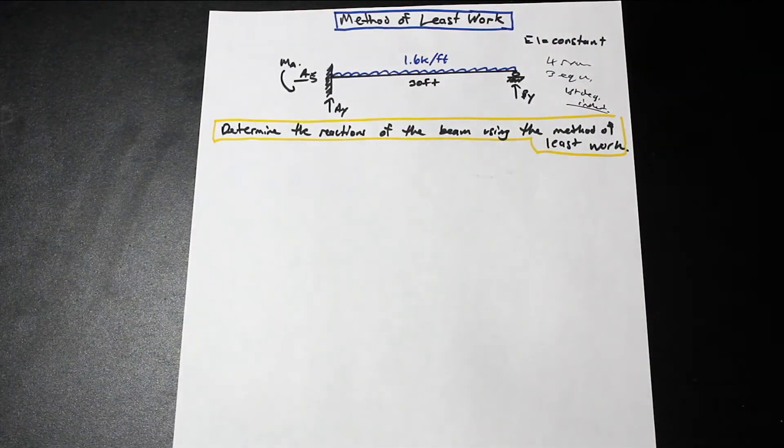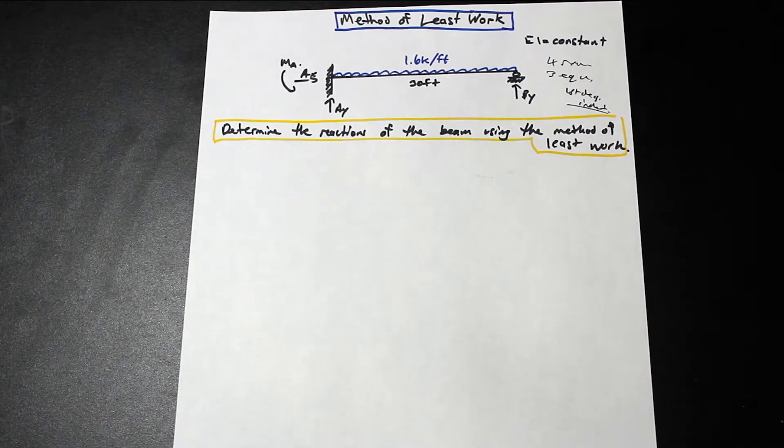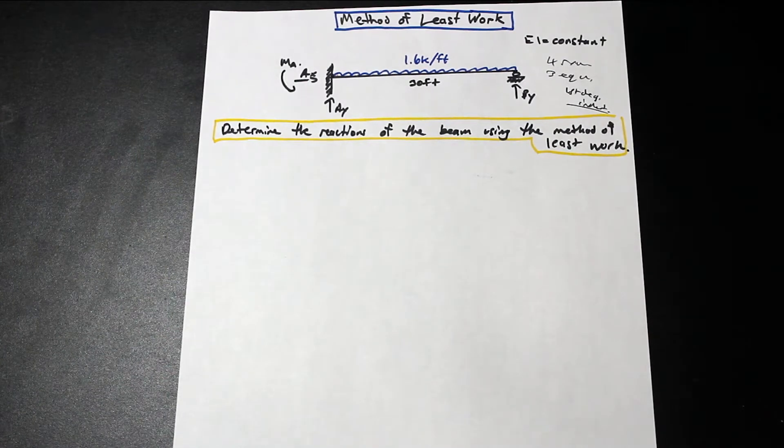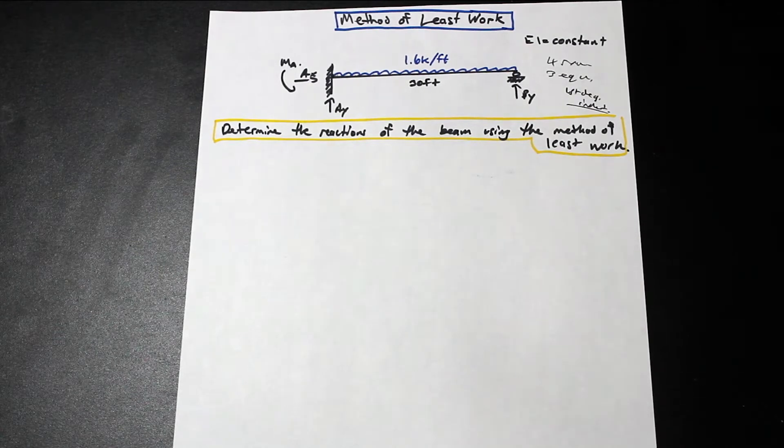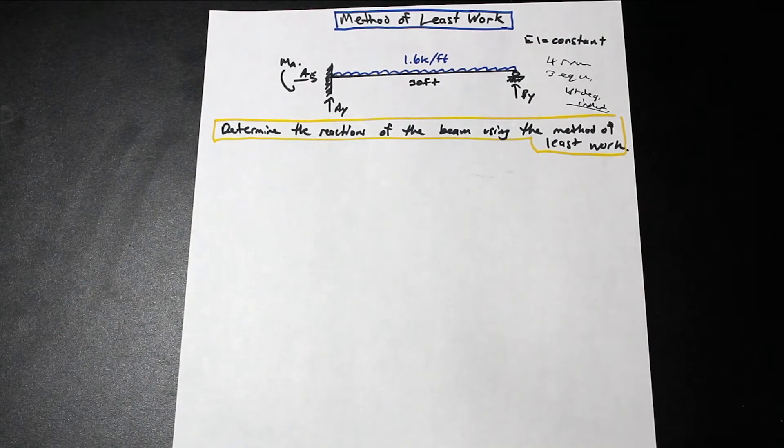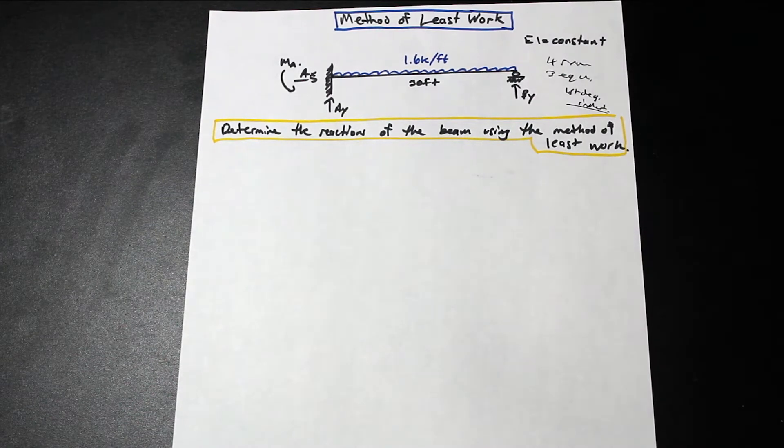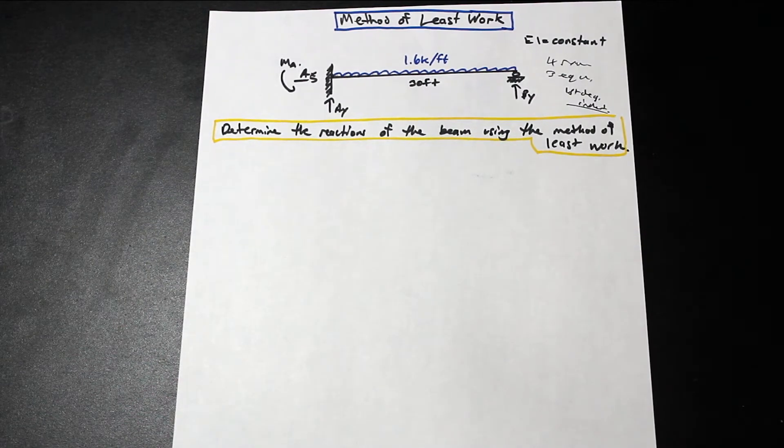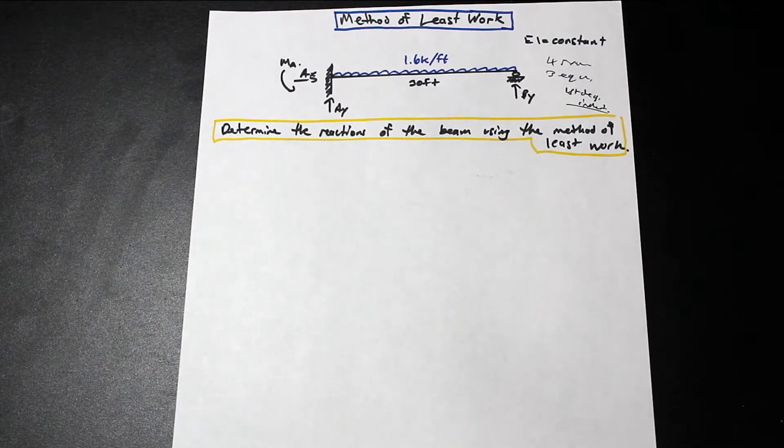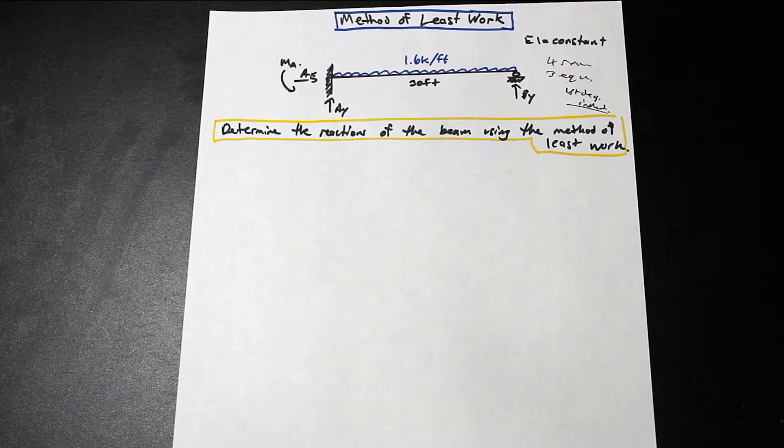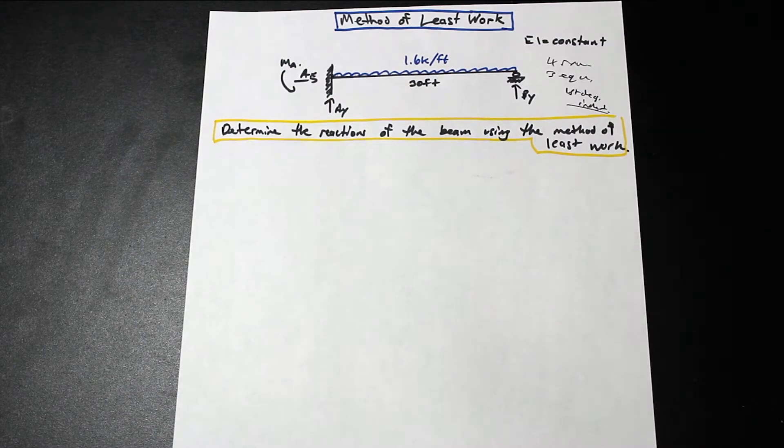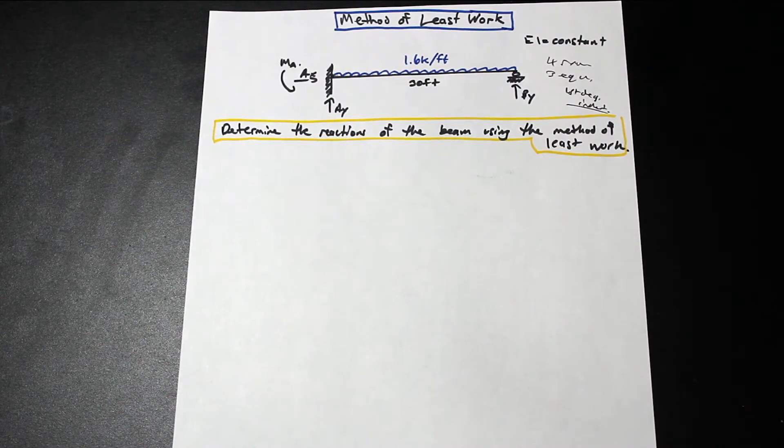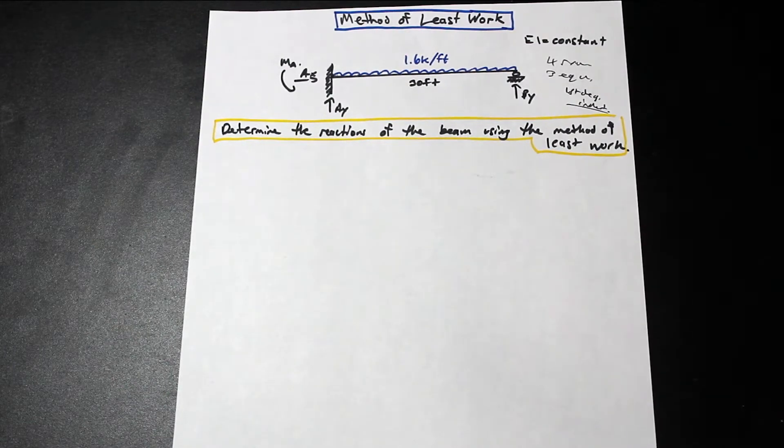So what is the method of least work? Well, just a couple concepts that are important here. The idea behind the method of least work is that the partial derivative, and this is according to Castigliano's theorem, we have a couple videos on that if you want to check that out. That the partial derivative of the strain energy with respect to a force equals the deflection of the point of application of the force along its line of action. So that's kind of like a wordy way of saying that the partial derivative of the strain energy is equal to the deflection.